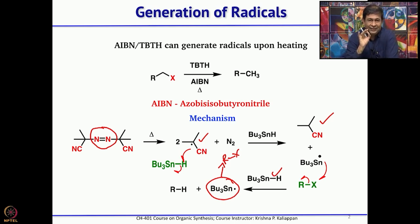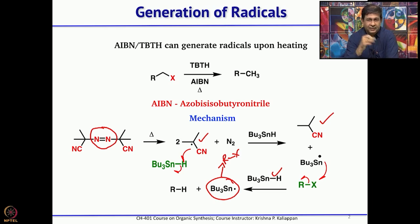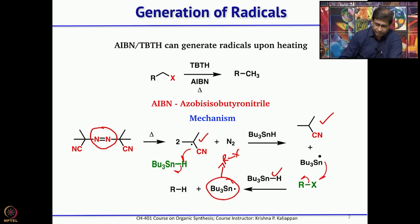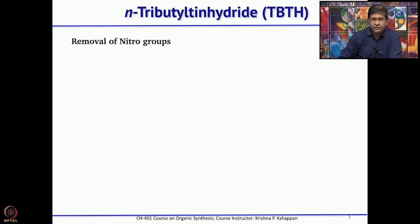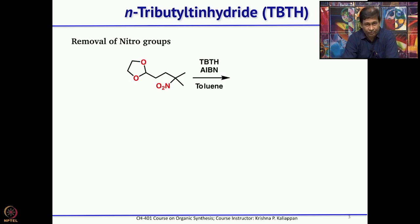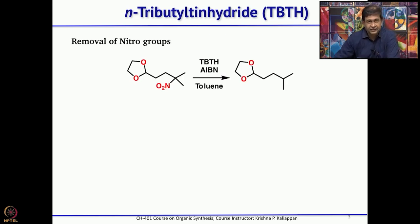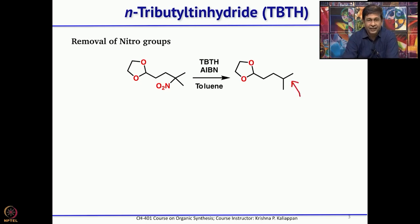You need only a catalytic amount of azobisisobutyronitrile — it is just a radical initiator. But you need more than one equivalent of tributyltin hydride because that is what replaces the halide in your system. When you use tributyltin hydride you can also remove a nitro group — if you have a nitro group it can be cleaved, and instead of the nitro group you get hydrogen in the product.